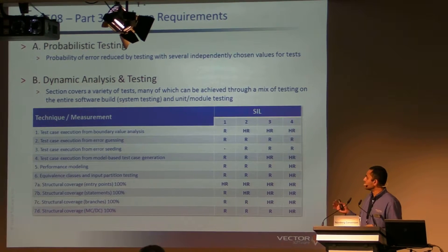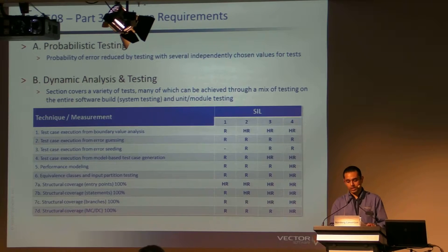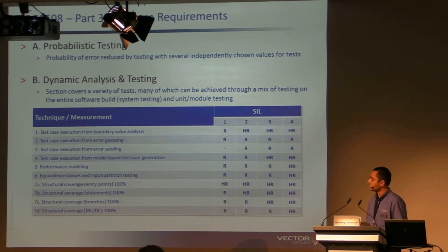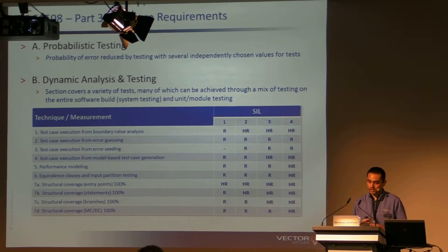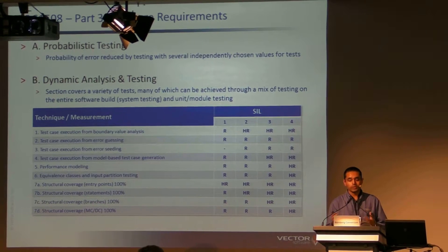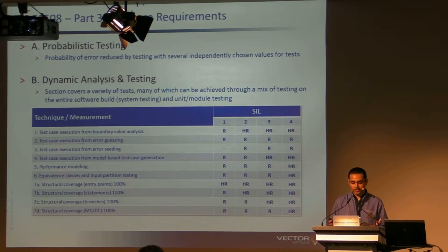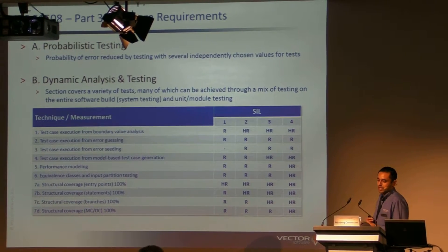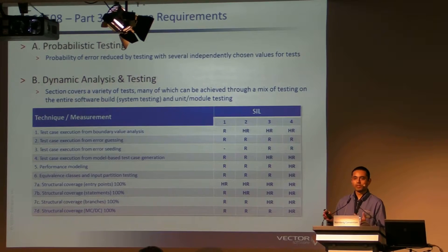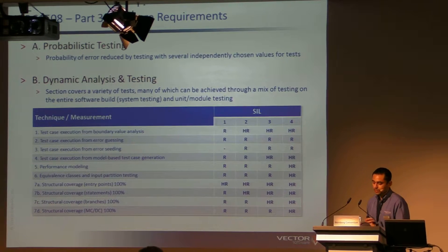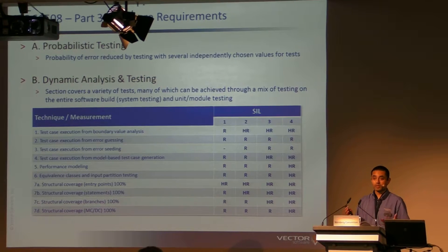Things like dynamic testing — this can be broken down into a further level again. Here what we're talking about is it covers a variety of tests; many of these can be achieved through regression testing on the entire software build. So things like system testing, or at the unit and module testing level. Most of the activities are described in Annex B, Table B.2, and that's where this is derived from. Although these activities can technically be done at a system level, the standard also specifies a dynamic analysis and testing phase which must be performed at the unit or module level. These must be done against the specifications of the software and the specifications of the code.